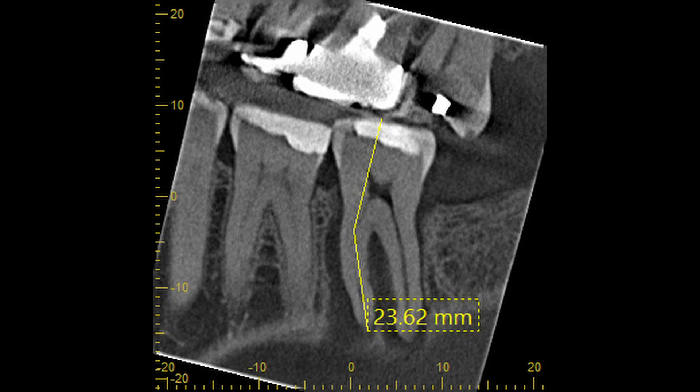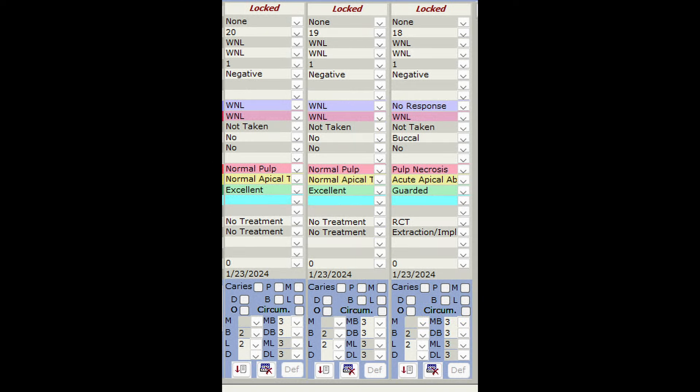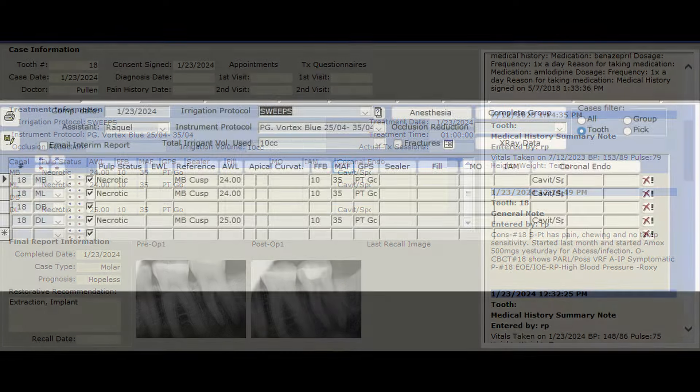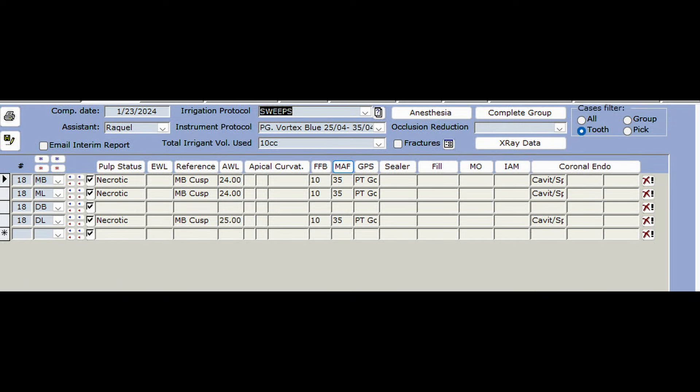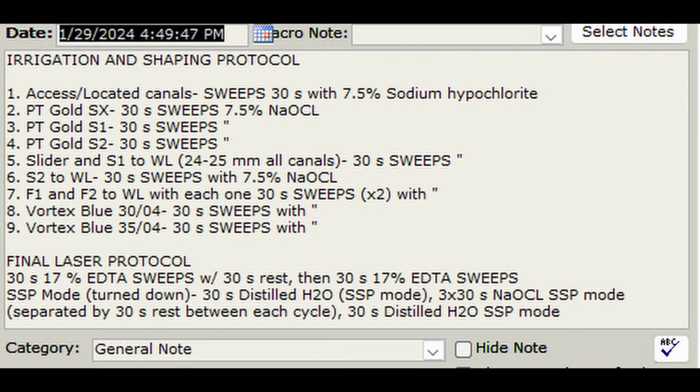He wanted me to try to save it even though he had a buccal abscess going on, buccal swelling. I went ahead and shaped it up to ProTaper Gold F2 and then decided to go bigger on the apical third and shaped up a vortex blue to a 35, all the canals. I then used the Photonis sweeps laser and I ended up doing nine cycles of sweeps with 7.5% sodium hypochlorite. That's a lot of cycles, but I figured I'd try it to see how well I'd clean it out.